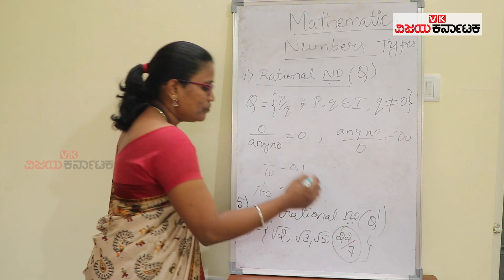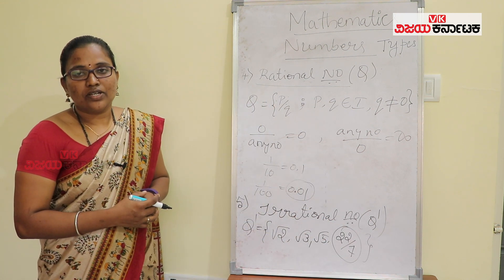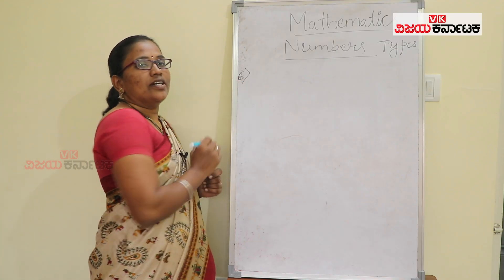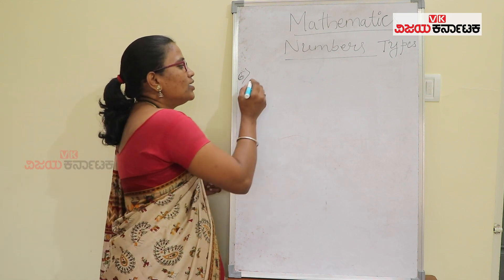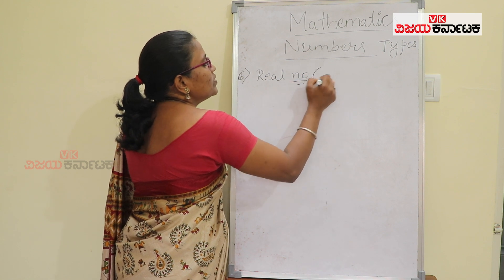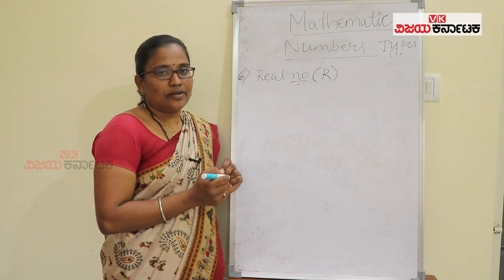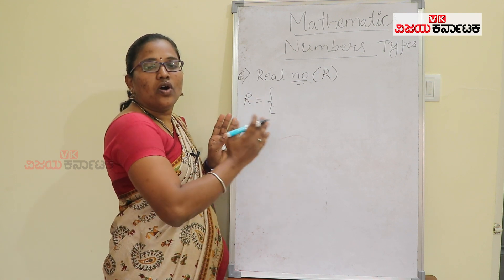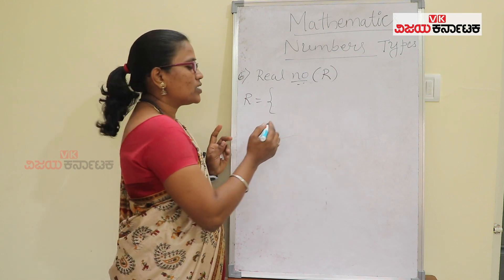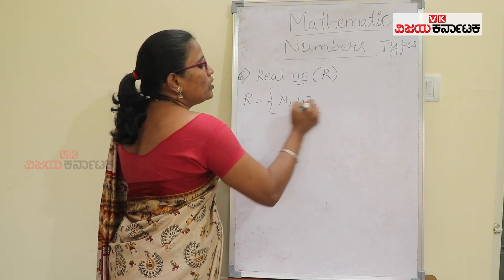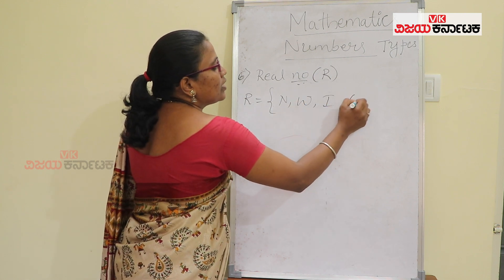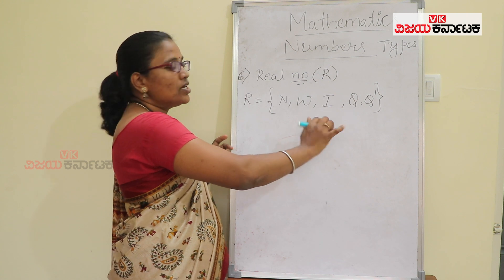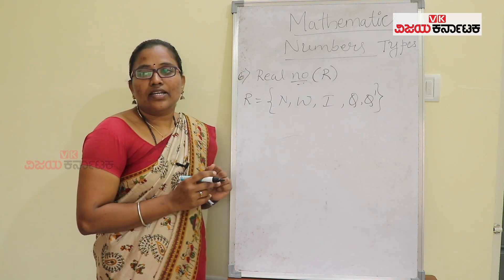So those values are called irrational numbers. Finally, there is one more number. This set of numbers is real numbers, denoted by the capital letter R. What is a real number? It is a family of all numbers — natural numbers, whole numbers, integers, rational and irrational. So it is a family of all the numbers. The collection of all numbers is known as real numbers.